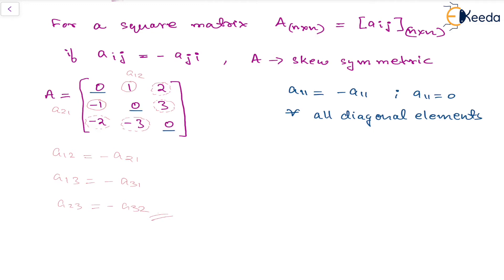So in another way, we can put the skew-symmetric matrix as if for a square matrix, if the transpose of the matrix is negative of the matrix, then it will be a skew-symmetric matrix.